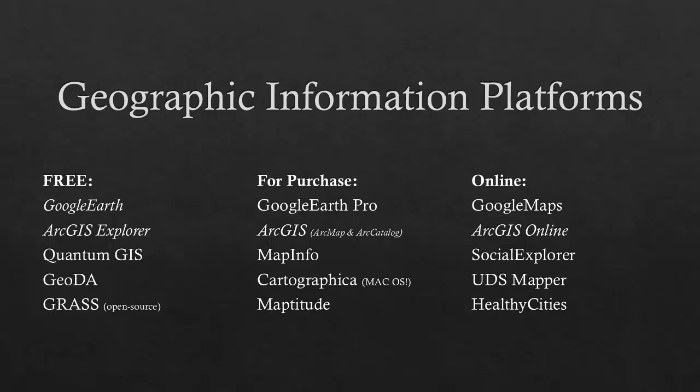There's some other free GIS software out there: Quantum, Geota, Grass — feel free to look these up. For purchase, similar to Google Earth, there's Google Earth Pro, which has some more advanced features where you can do a little bit more analysis and create nicer map layouts that you can't do in the free version of Google Earth.